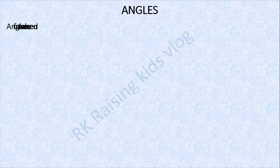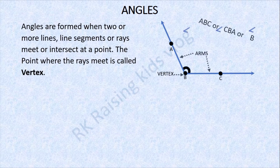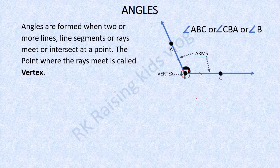Next: Angles. Now we will know about angles. Angles are formed when two or more lines, line segments, or rays meet or intersect at a point. The point where the rays meet is called the vertex. The rays or line segments that extend from the vertex are called the arms.